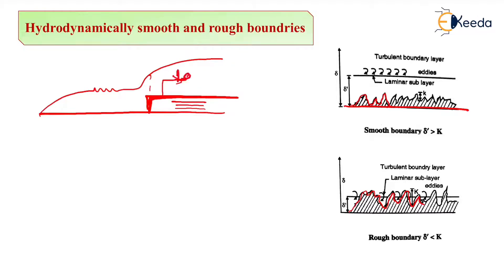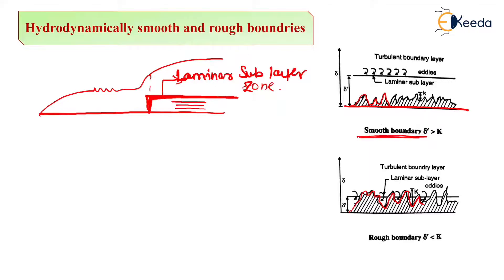This laminar sub-layer zone plays a very important role in deciding whether a portion of a plate is hydrodynamically smooth or rough. If the undulations are below the laminar sub-layer, they are not disturbing the shear stresses beyond this laminar zone — that type of plate is called a smooth boundary. If the undulations have a height greater than the laminar sub-layer, or if part of the plate encroaches beyond the laminar sub-layer zone, it will create disturbances and wake formations — that type of plate is called a rough boundary.